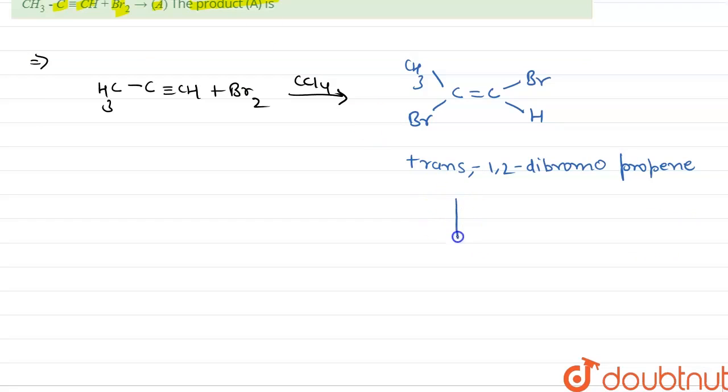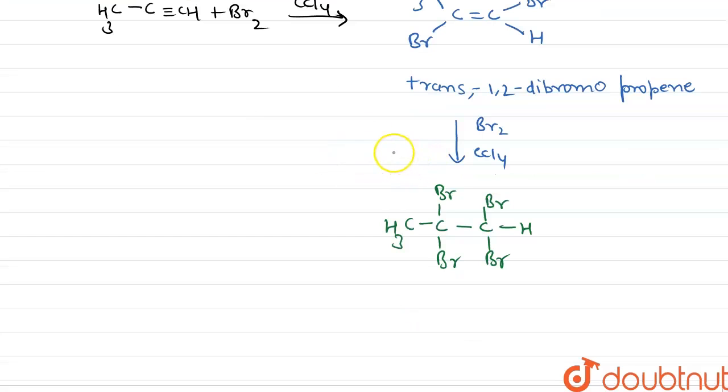Now this alkene will further react with Br2 in presence of CCL4 and from here we will get a carbon with bromine, bromine, H, bromine, bromine and CH3 group. And this compound is known as 1,1,2,2-tetrabromopropane.